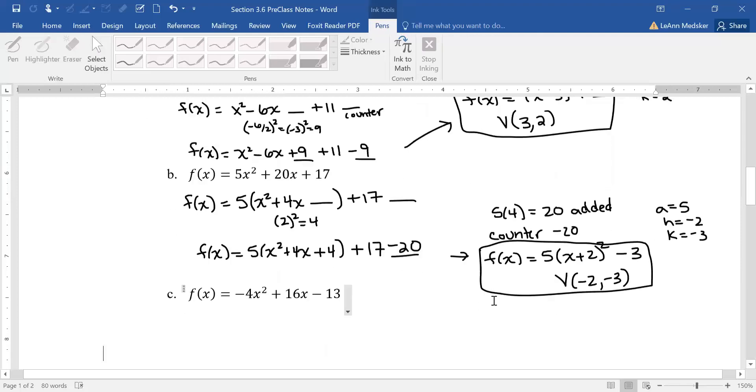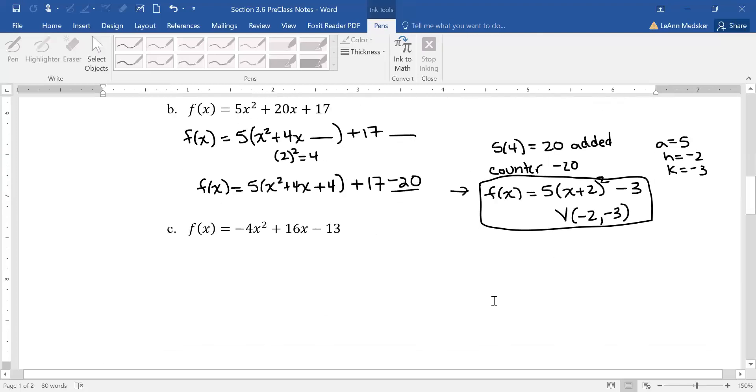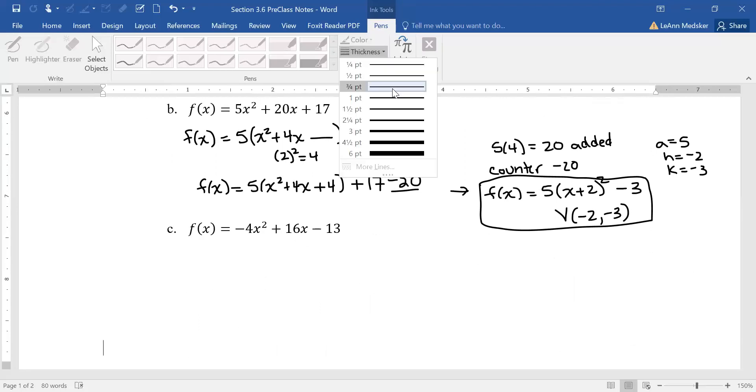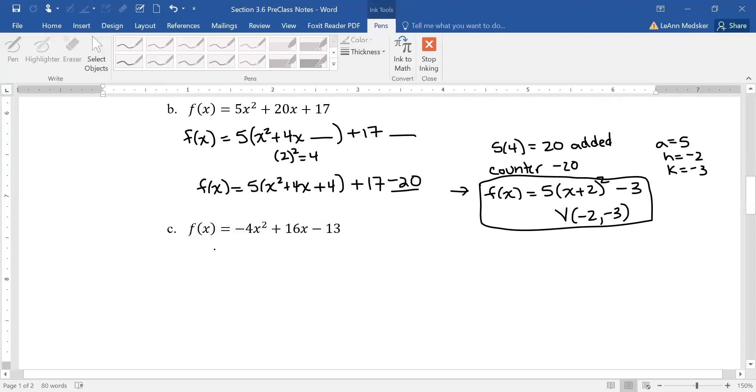Okay one more of these and then we're going to try some where we're given an ordered pair and a vertex ordered pair. So for this first one again not leading with a 1 so we need to pull out a negative 4 this time not just a positive 4. That would change the signs of both numbers here and it also is affecting the blank that I don't have yet. Then I bring down my minus 13 and I add my counter blank on the other piece.